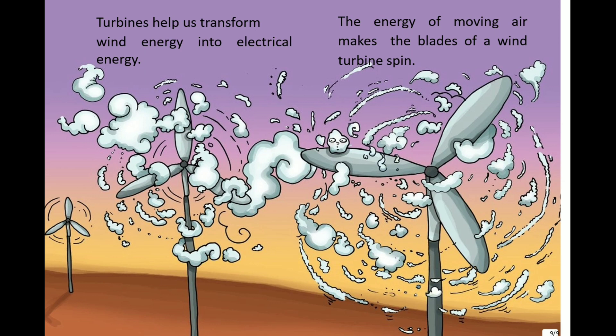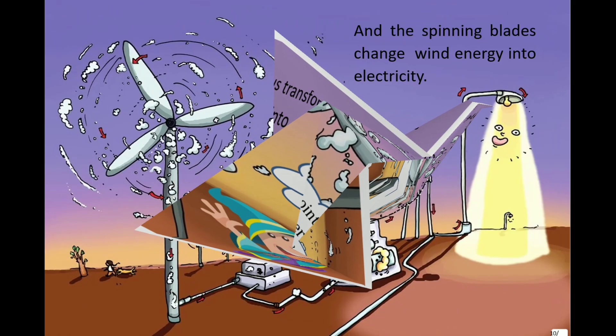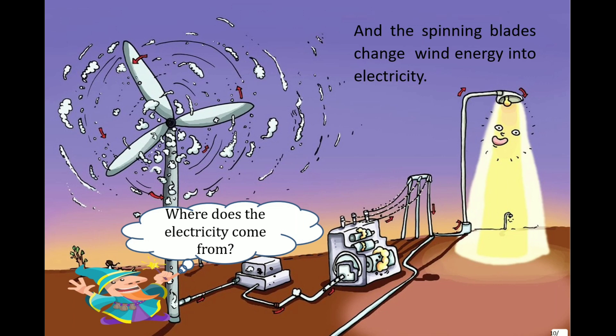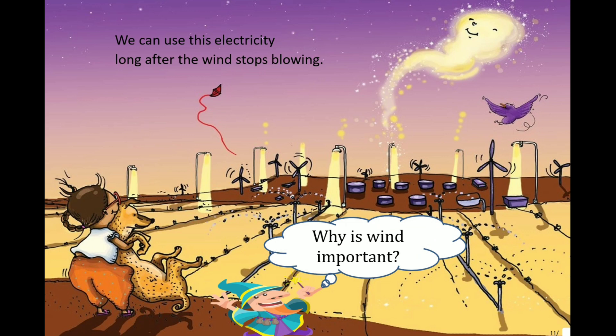Turbines help us transform wind energy into electrical energy. The energy of moving air makes the blades of a wind turbine spin. Can you point in the picture where the turbines are? And the spinning blades change wind energy into electricity. Where does the electricity come from? We can use this electricity long after the wind stops blowing. Why is wind important?